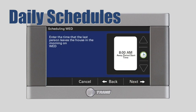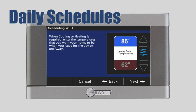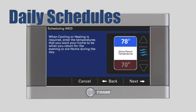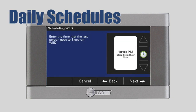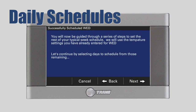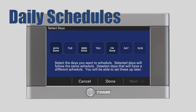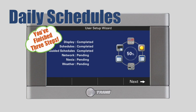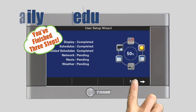On this screen, you'll enter the time that the last person leaves the house on this morning. We'll leave the default time of 8 a.m. and press Next. On the following screens, you will repeat this process for each period during the day. When you have completed setting the schedule for this day, you'll set the schedule for the remaining days in the week. When you've finished, the screen will show you that you have completed three of the six setup wizard steps. To continue, press Next.